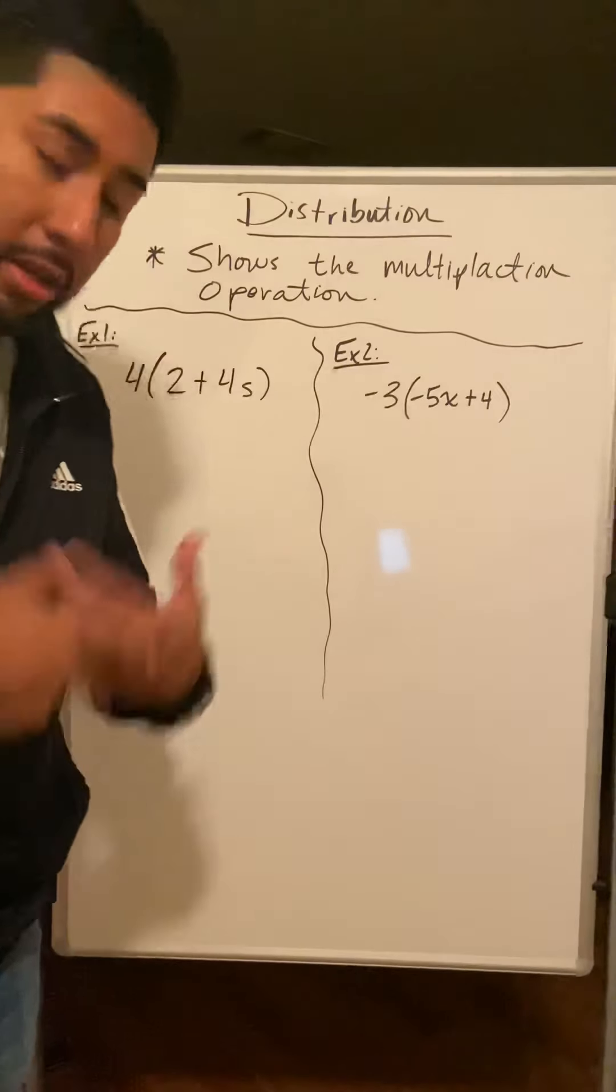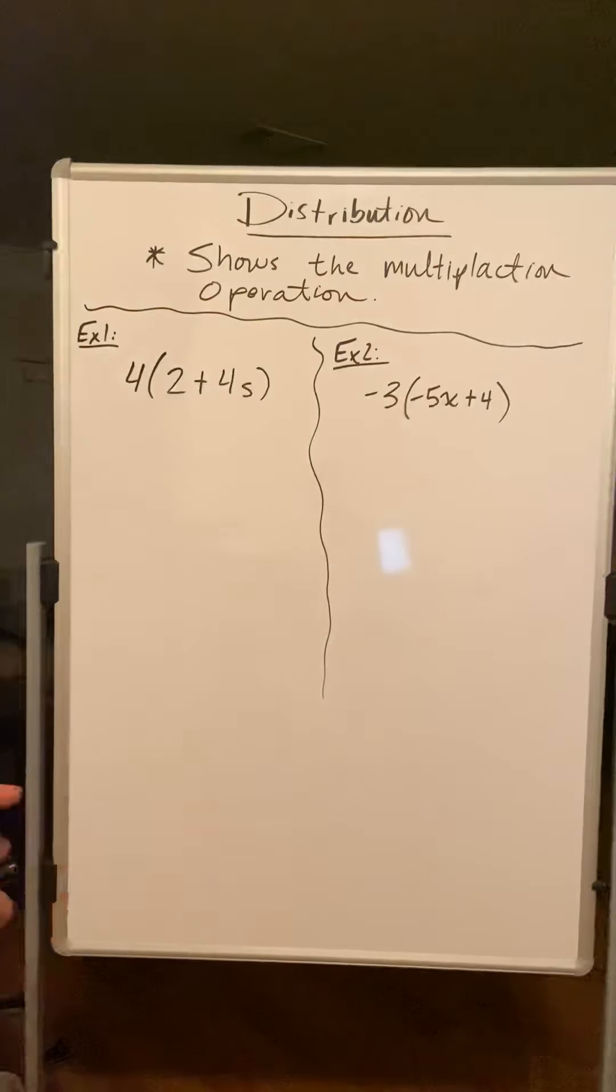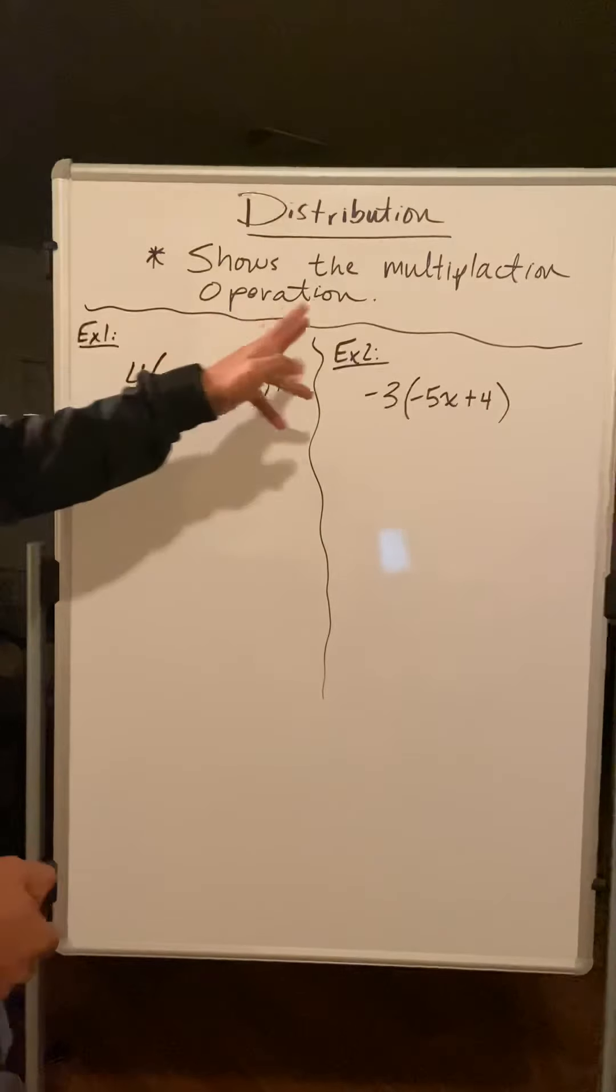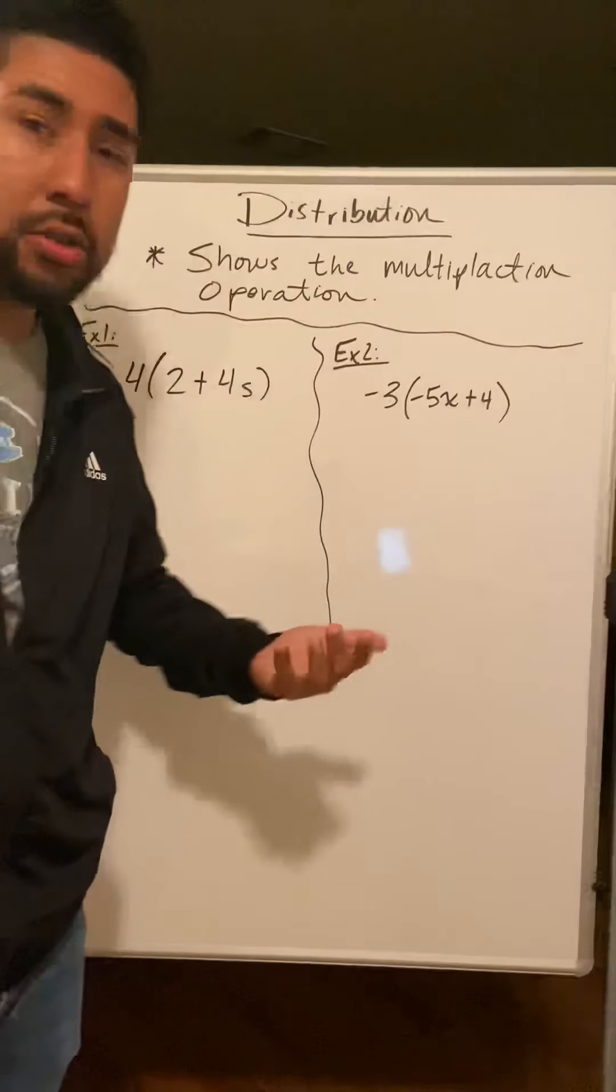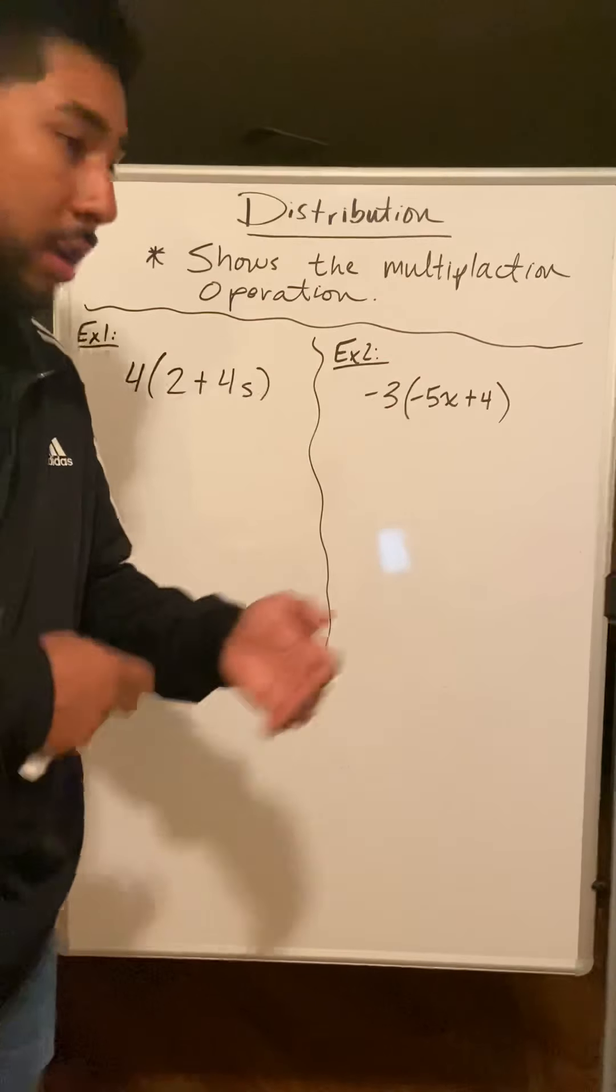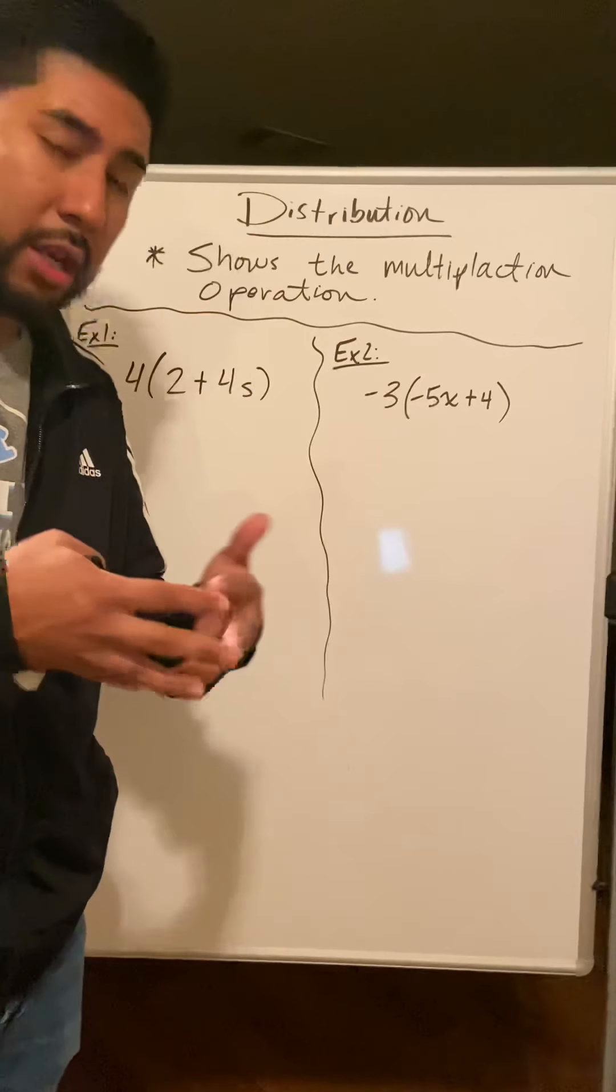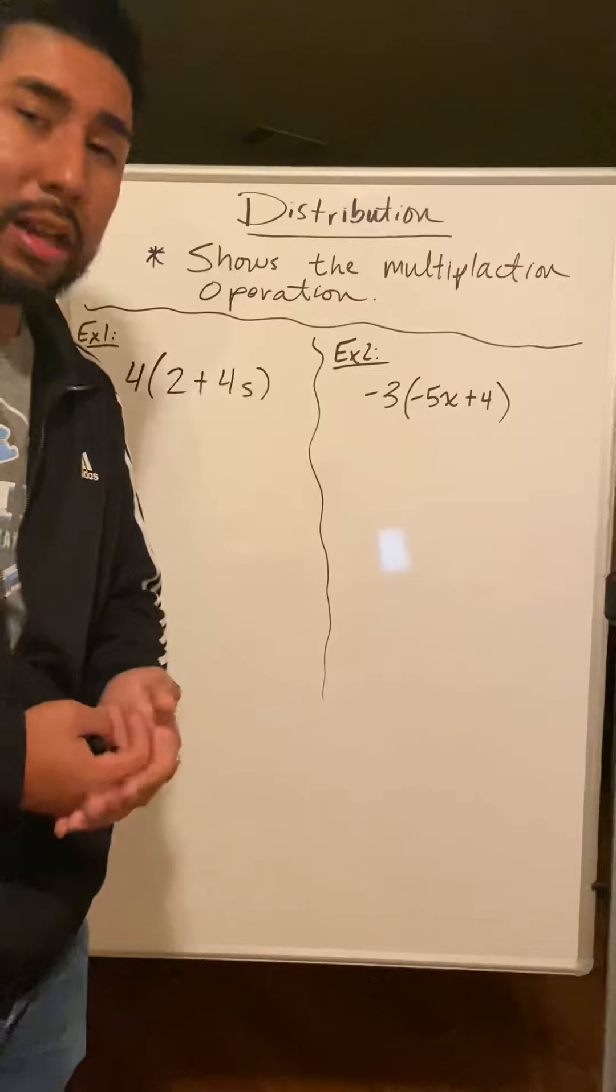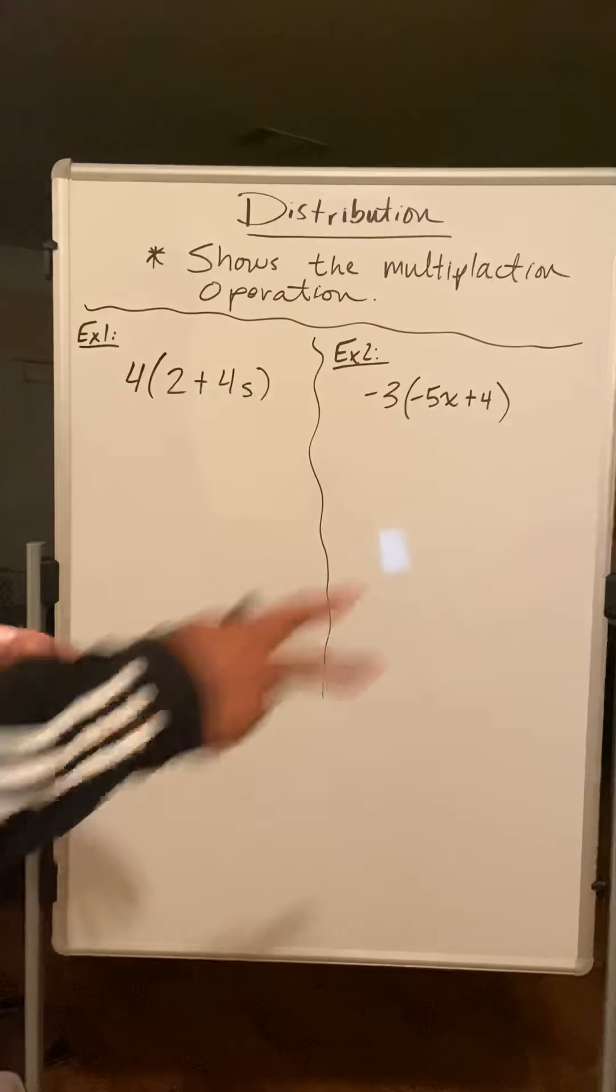Okay, so today's topic is a new topic. Hopefully in eighth grade they showed you a little bit of this. It's called distribution. It shows the multiplication operation, so all we're doing here is multiplying. In the next video I'm going to show the combination of multiplication and adding/subtracting - distribution and combining like terms. But let's get started here with two problems.